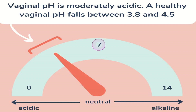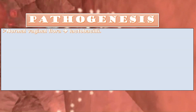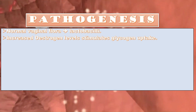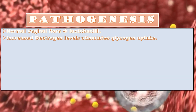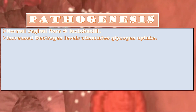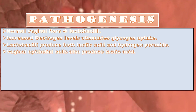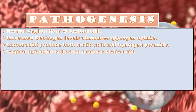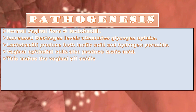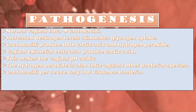The normal vaginal flora in women of reproductive age is predominantly lactobacilli. At puberty, estrogen levels increase, stimulating glycogen uptake by vaginal epithelial cells. Lactobacilli produce both lactic acid and hydrogen peroxide. Vaginal epithelial cells also produce lactic acid as a byproduct of glycogenolysis, making the vaginal pH acidic.